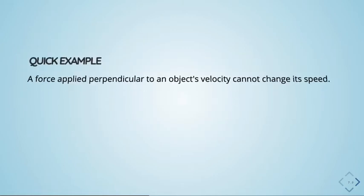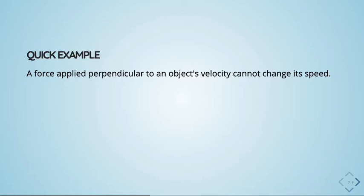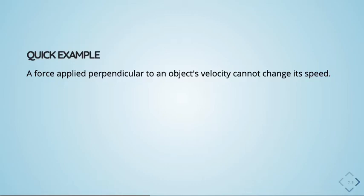Here's a quick example: a force applied perpendicular to an object's velocity can't change its speed. We want to unpack that sentence and show it's true using properties of vectors. The key phrase is 'cannot change' — when you hear something is not changing, as a calculus student your mind should go to 'derivative equals zero.' If you ever blank out in a calculus test, differentiate something and set it equal to zero — good chance that's what you're supposed to do.